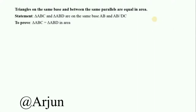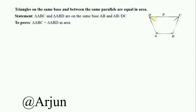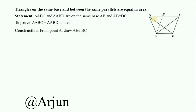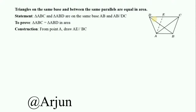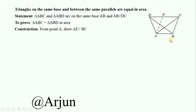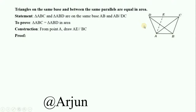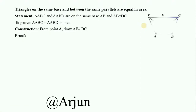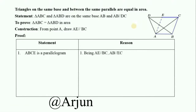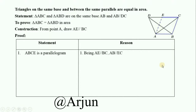Our proof begins with a construction: from point A, draw AE parallel to BC. AE is a line and BC is a side of triangle ABC. So AE is parallel to BC. This is our construction, and the proof starts here. We make a table with statements and reasons.